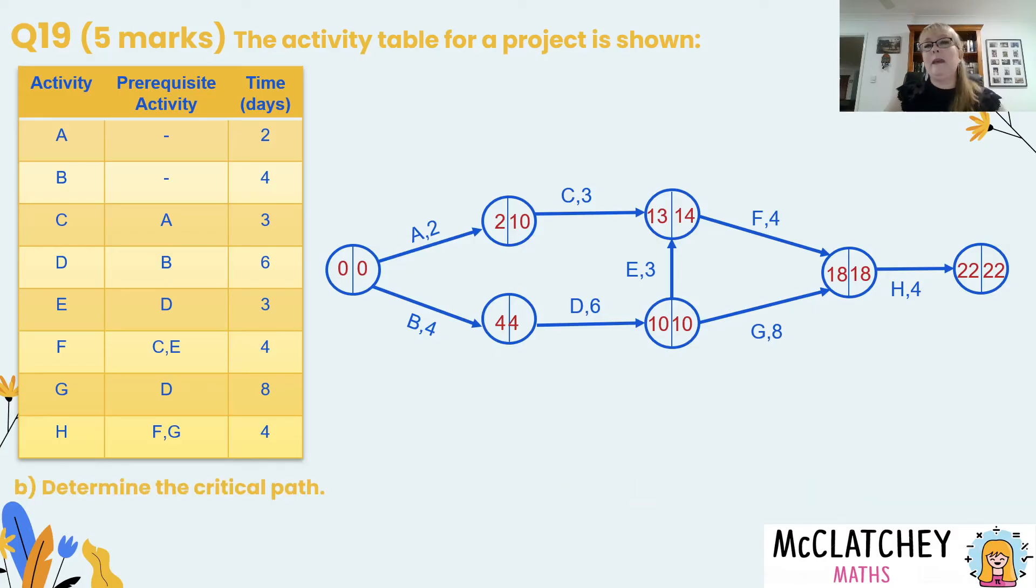Now we're on to part B. We have to determine the critical path. This is the pathway through the network that takes the longest to get everything done and the reason why it's the critical path is that anything that falls off the wayside on that pathway will make the whole project blow out or take longer than it should. Now the way to correctly identify your critical pathway is to look for the vertices where the number is the same on the left and the right hand side. So we can see that's our bottom pathway here. Now when you're actually determining the critical path you actually need to write down the letters of that pathway. It's going to be B, D, G and H. So then that's our critical path that earned us our fourth mark.